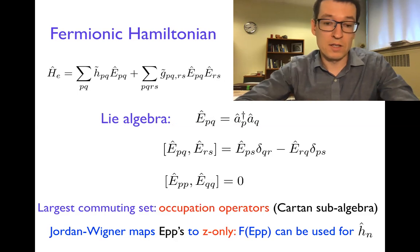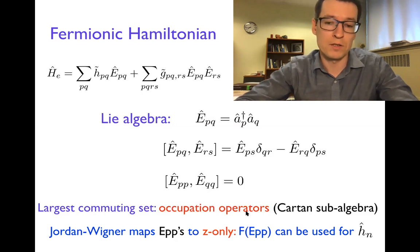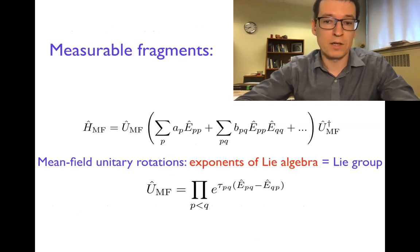Now, what is also interesting is that Jordan-Wigner mapping, at least, can map these operators, occupation operators, into z-only operators. Therefore, any function of these occupation operators from Cartan sub-algebra can be used as these operators that we can measure.